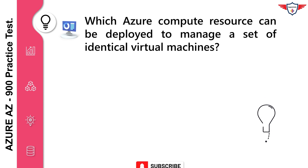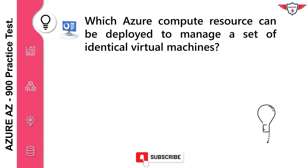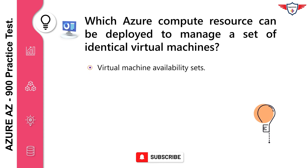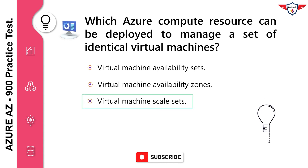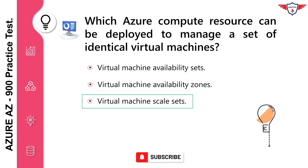Which Azure compute resource can be deployed to manage a set of identical virtual machines? Virtual machine availability sets. Virtual machine availability zones. Virtual machine scale sets. The correct answer is virtual machine scale sets. Virtual machine scale sets let you deploy and manage a set of identical virtual machines.